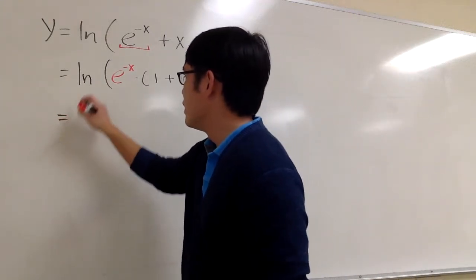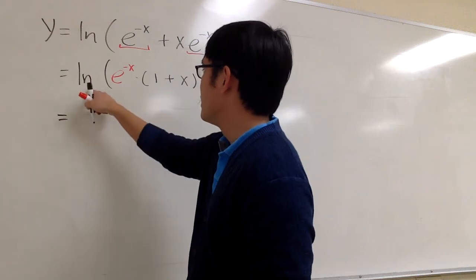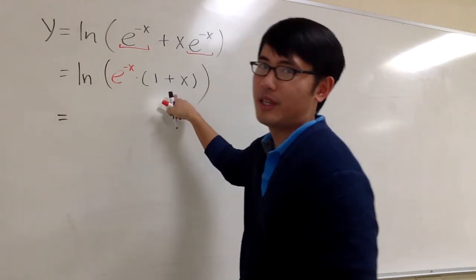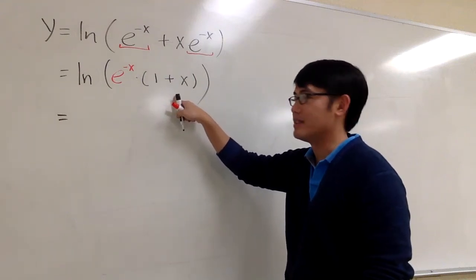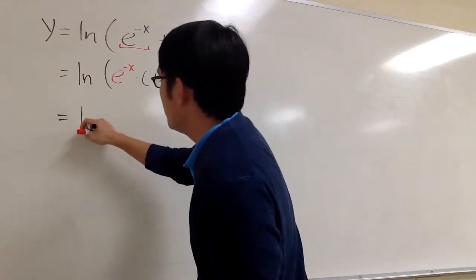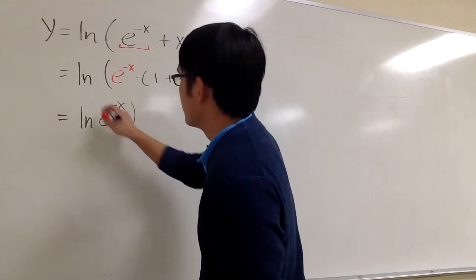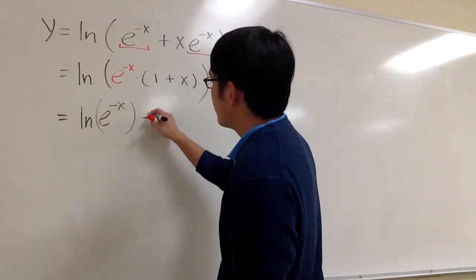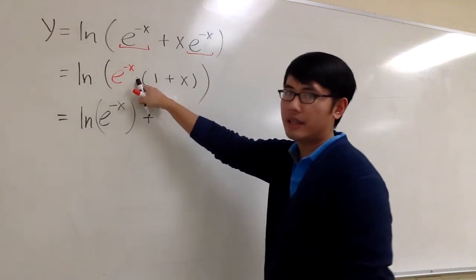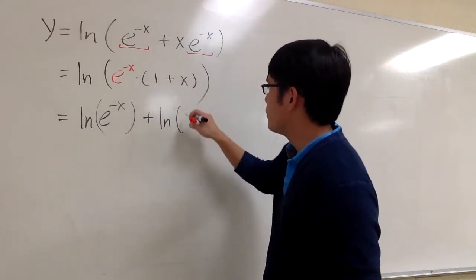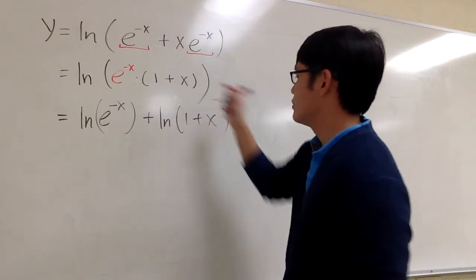And then we can use the ln property because we're talking about ln of one thing times the second. So we can write this as a sum of two ln. The first one will be ln of e to the negative x, close the parentheses, and then you are going to add, because here we are multiplying it becomes adding, the second ln of one plus x, just like that.